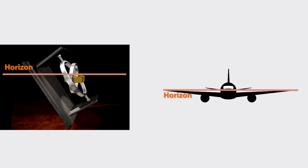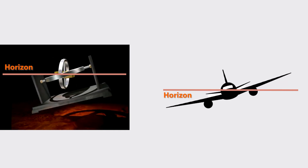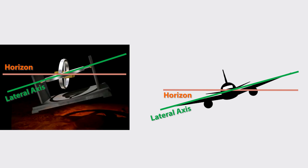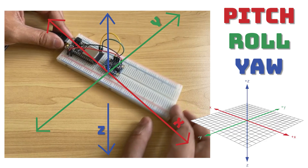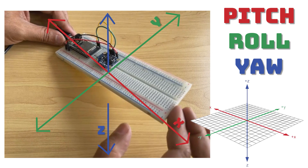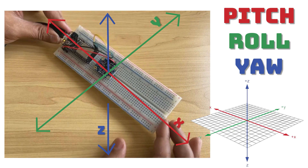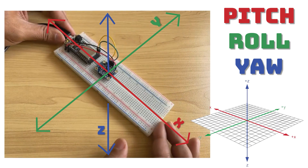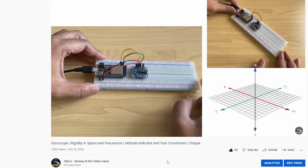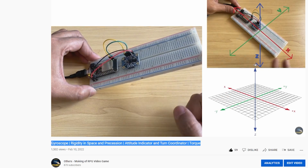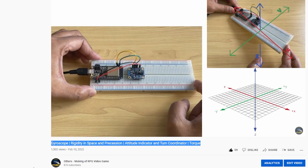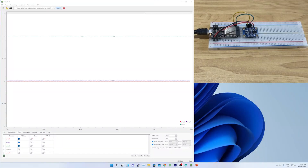I will first work on the roll angle and then use the same algorithm to determine the pitch. From now on I will be using actual terminology about the angle names: pitch for x-axis, roll for y-axis, and yaw for z-axis. I have already explained these names in detail in my previous video — the link is in the description below.